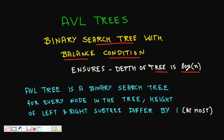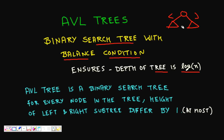In a binary search tree, for a parent node, everything on the left subtree will be less than or equal to it, and on the right you have everything greater than the parent. This property should apply to all nodes in the tree.